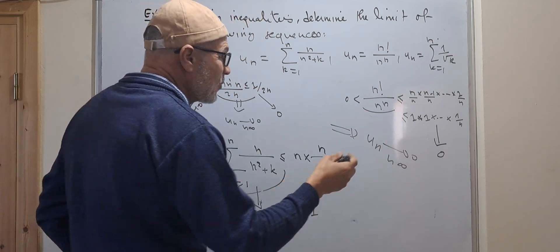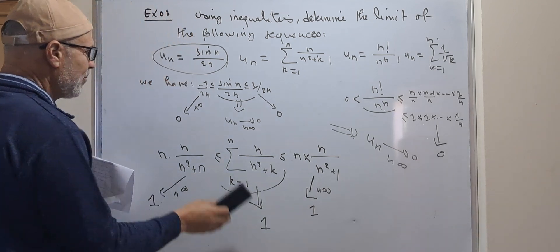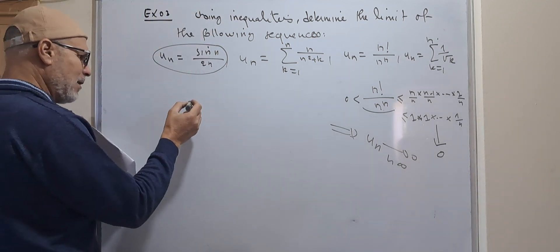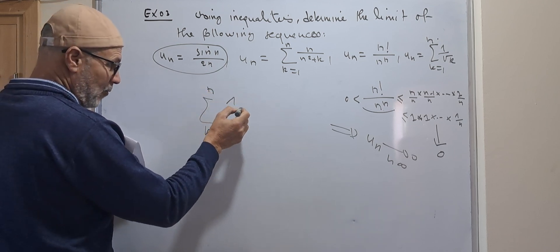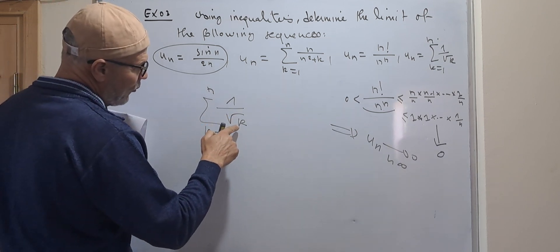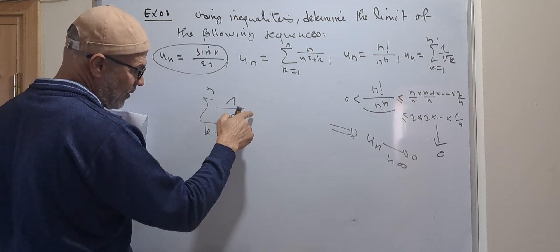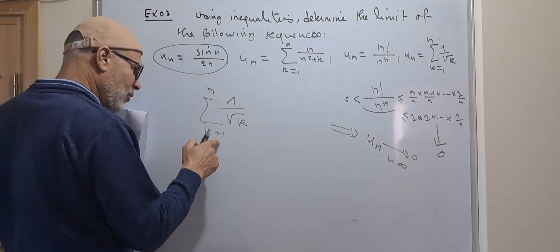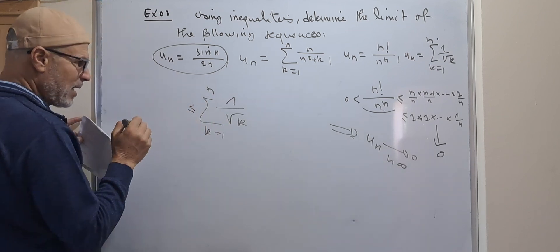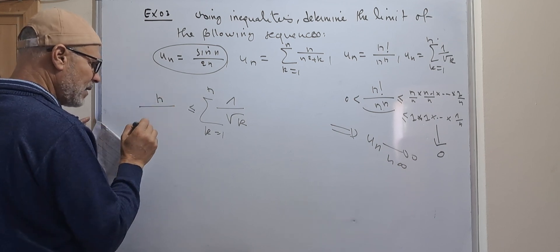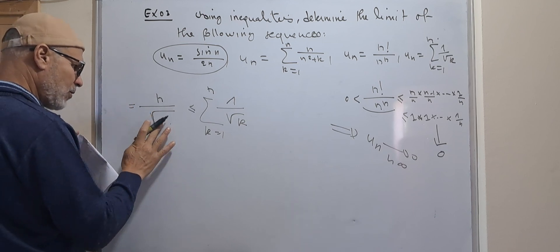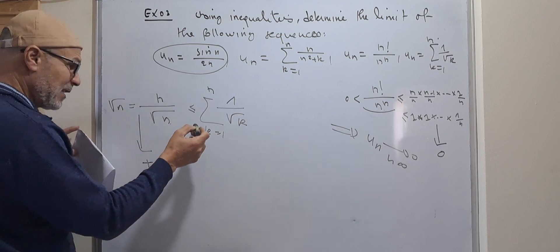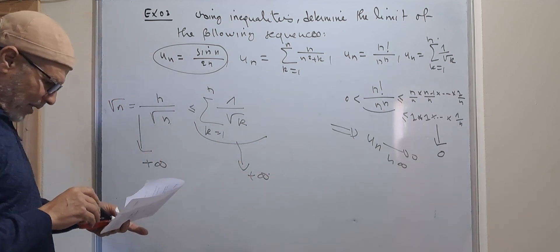For the last one, u_n is the sum from k equal 1 to n of 1 over the square root of k. The greatest term is 1 over the square root of 1, and the smallest is 1 over the square root of n. The sum is greater than or equal to n times 1 over the square root of n, which equals the square root of n. When n goes to plus infinity, the square root of n goes to plus infinity, so the sum also goes to plus infinity.